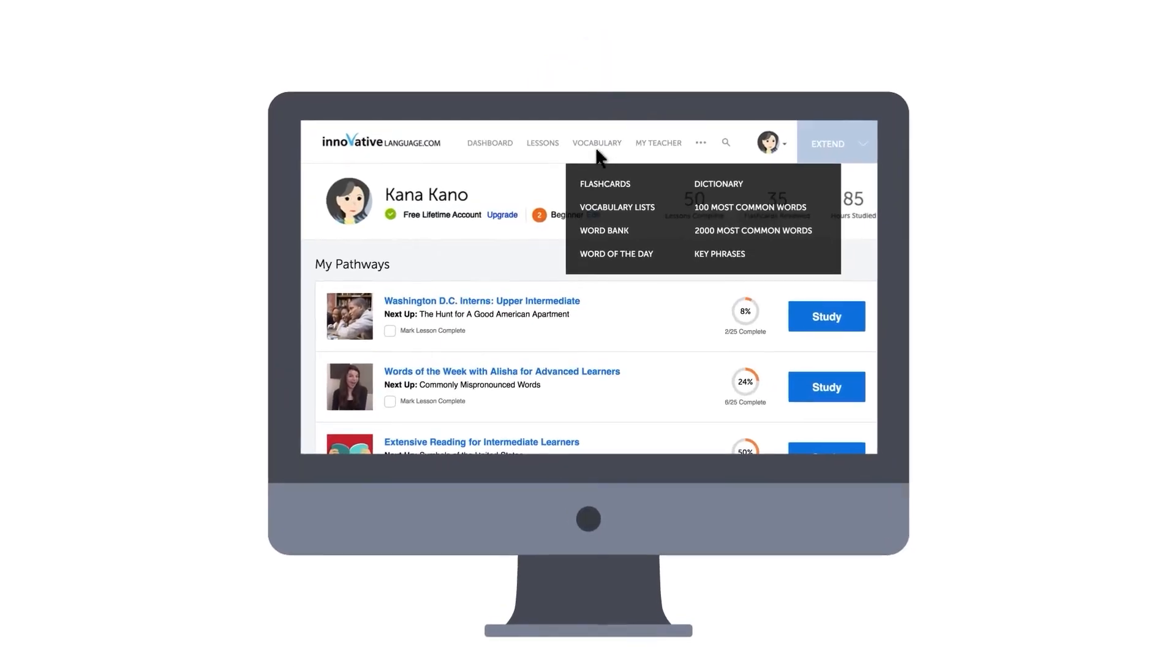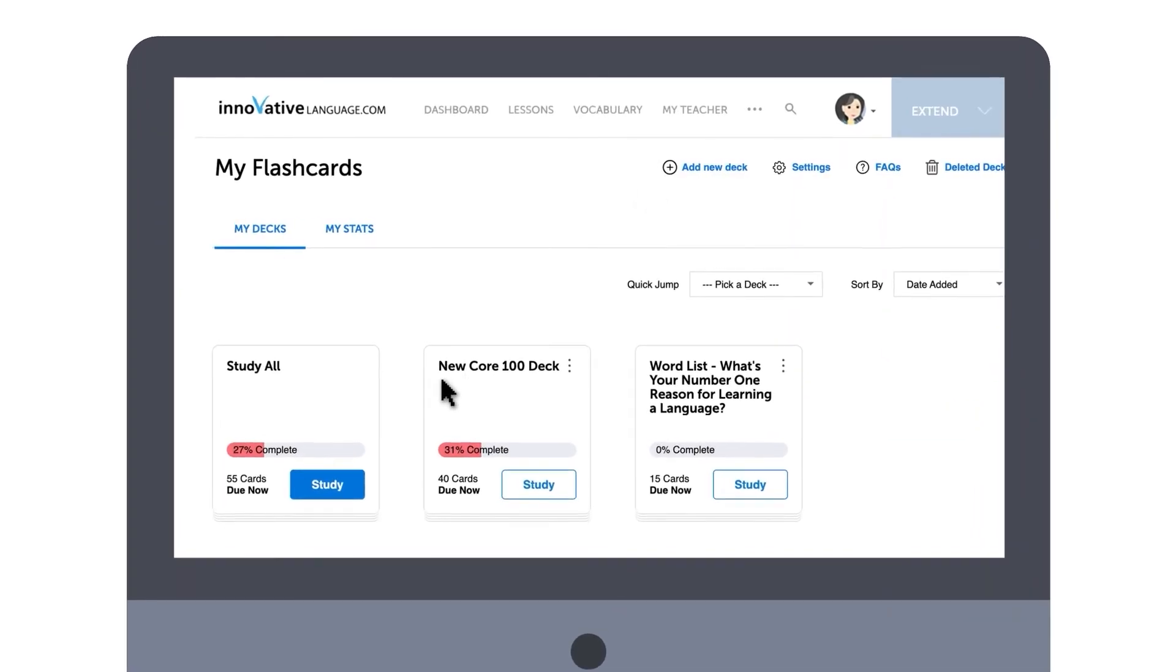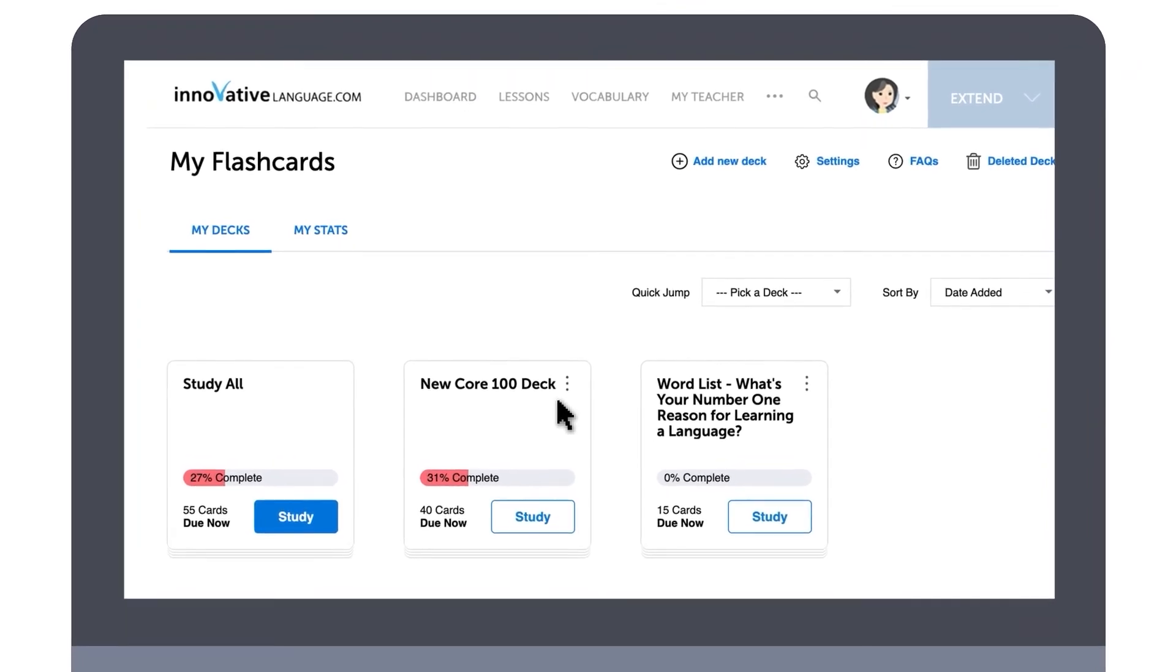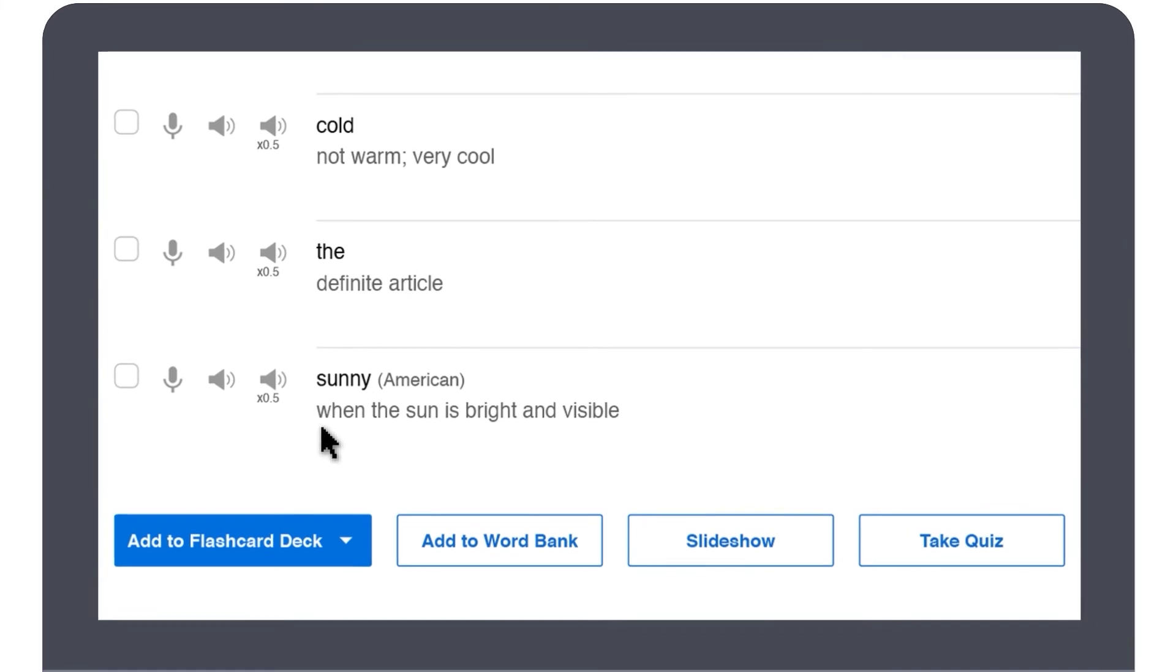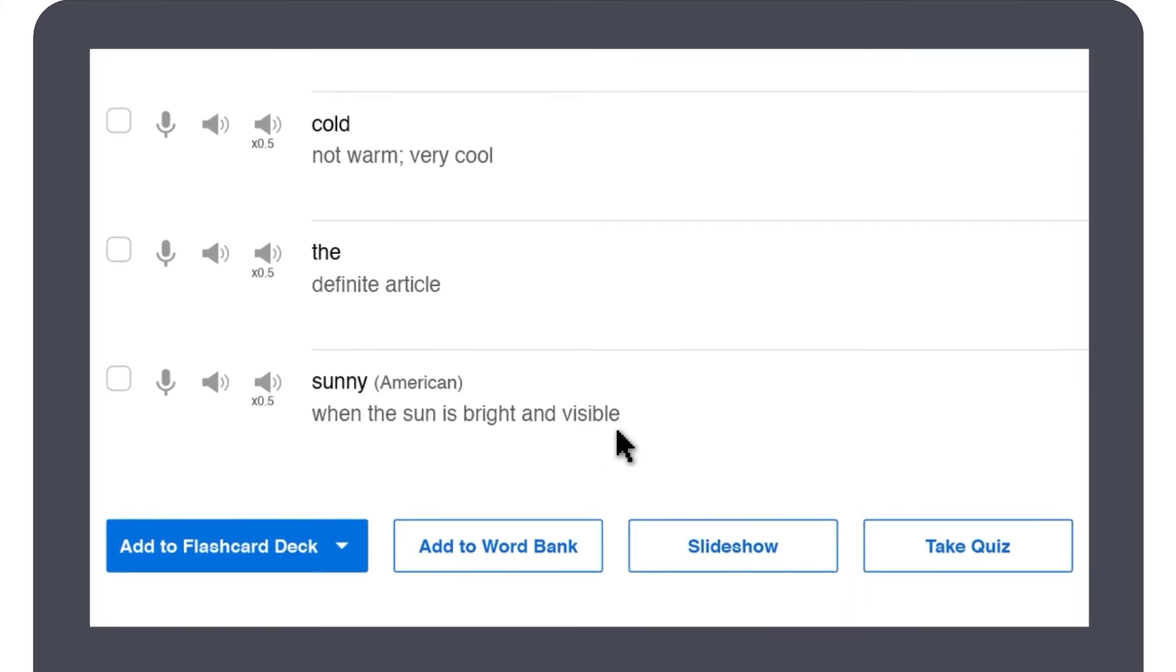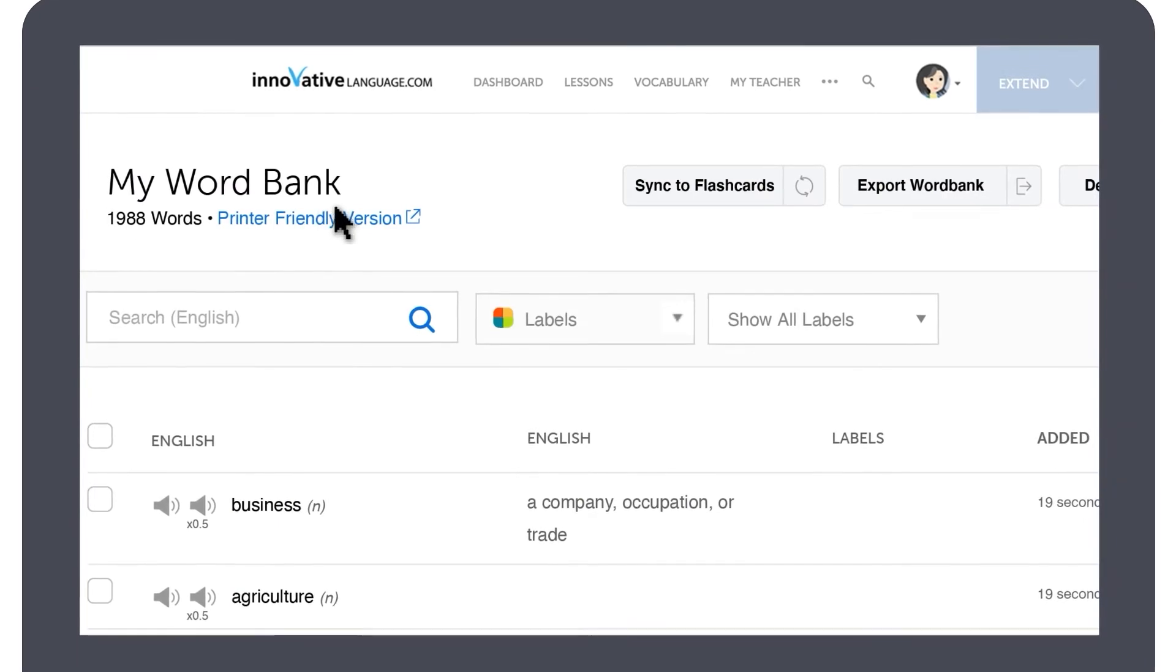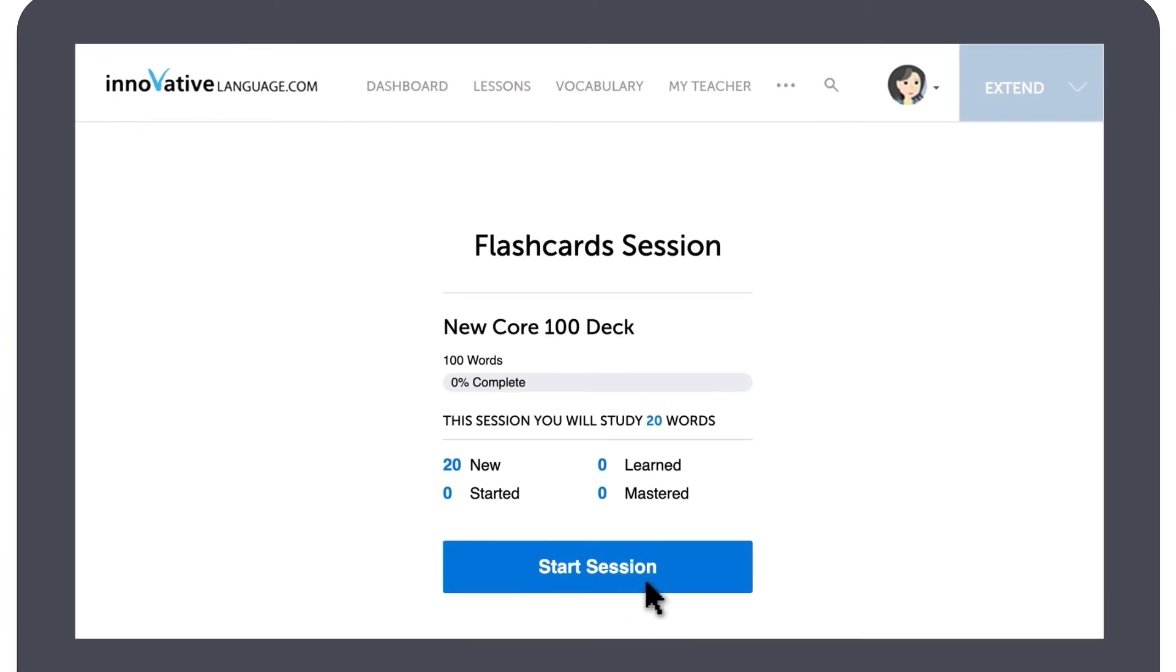So, how can you take advantage of this learning method to learn more words? Well, there's a study tool that all serious language learners love. It's called spaced repetition flashcards. And you can find our flashcards in the vocabulary drop-down menu on the site. Inside, you already have the 100 must-know words deck prepared for you, so you can jump in and start learning right away. You can also make flashcard decks from words and phrases presented in our lessons, the 2000 core word list, words saved in your word bank, and our free vocab lists. Just click on study and start session to start learning.